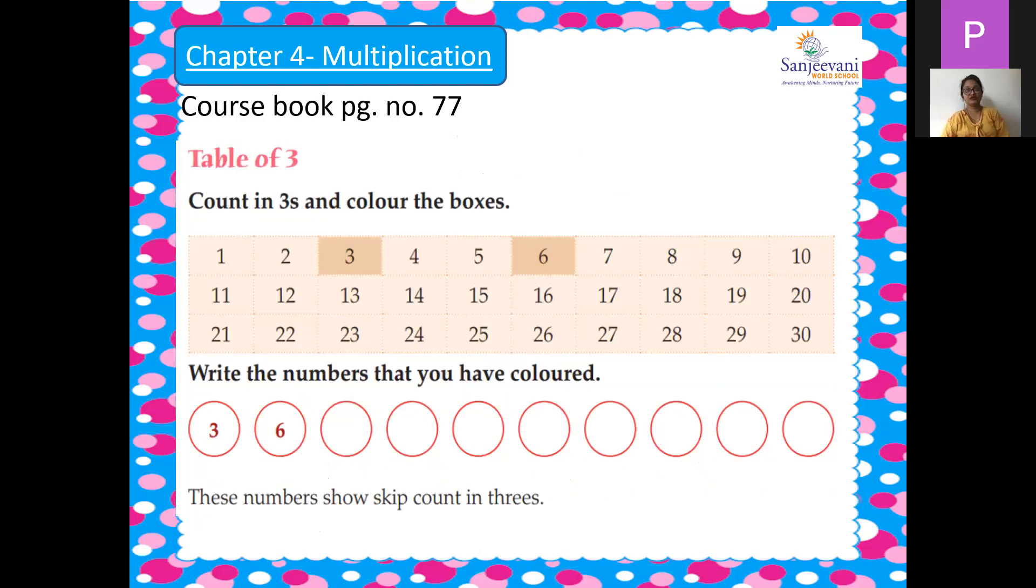So as you can see, they have colored box 3 and 6. Now you will color box 9, 12, 15, 18, 21, 24, 27 and 30. And whatever boxes you have colored, you will write the numbers in the circle. 3, 6, 9, 12, 15, 18, 21, 24, 27 and 30. So these numbers are showing skip counting of three.